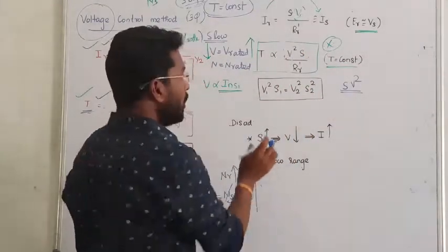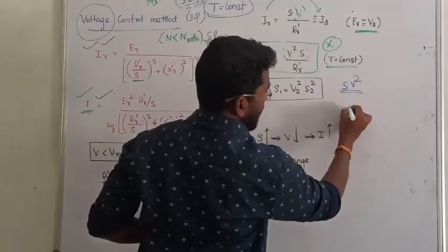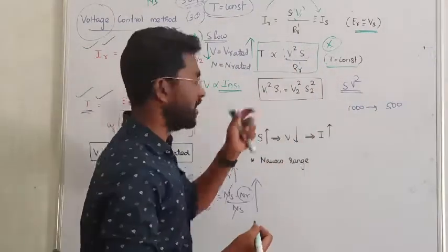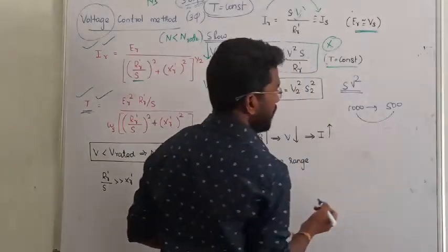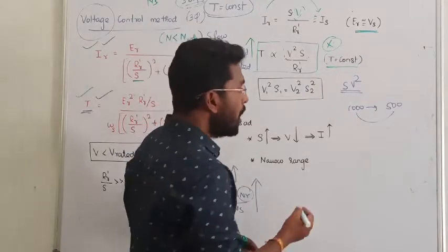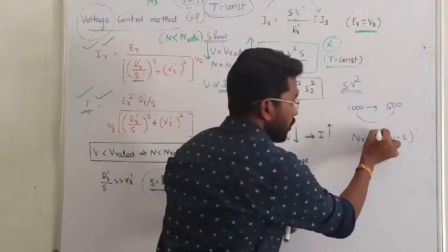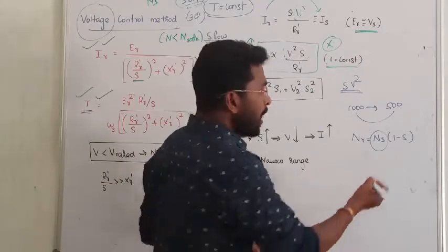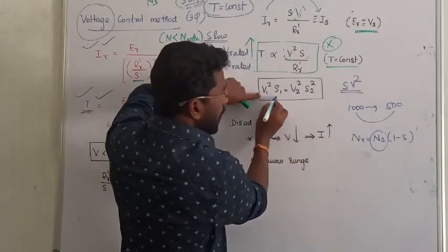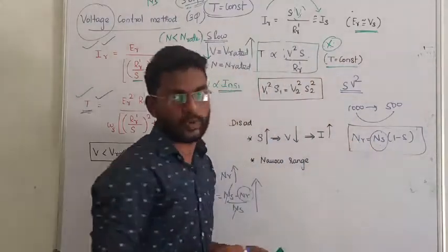In an exam problem, you will be given an initial voltage and its corresponding slip. For example, if I have 1000V and the voltage is reduced to 500V, find the new speed of the induction motor. Using the torque-constant condition: V1²/S1 = V2²/S2, you can find the new slip S2. Then the rotor speed can be written as Nr = Ns × (1 − S). Since synchronous speed is constant, you can find the new rotor speed.